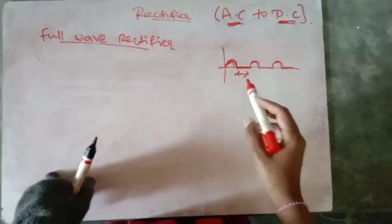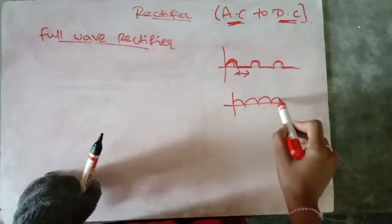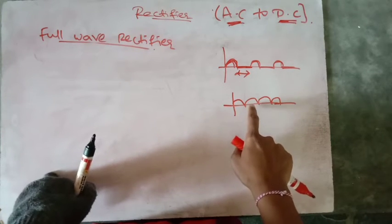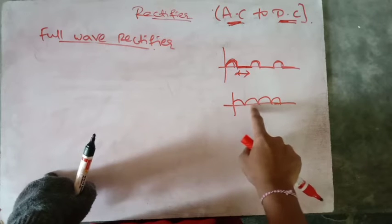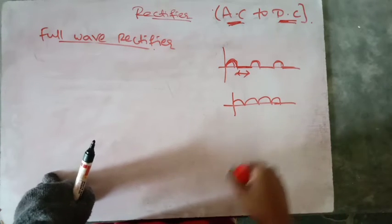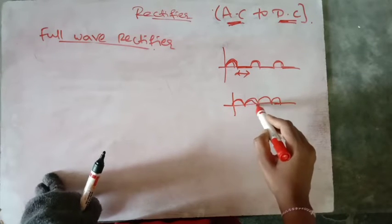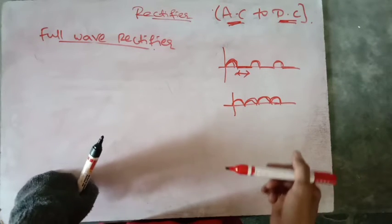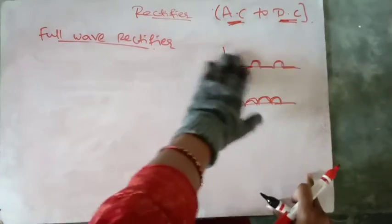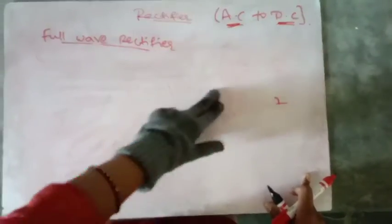We need the output such that there must be no lag of time. There must be no lag for getting the output. We need immediate output. So for reducing this lag, we are using full wave rectifiers.